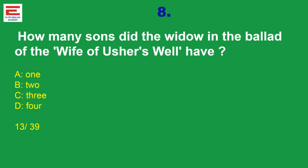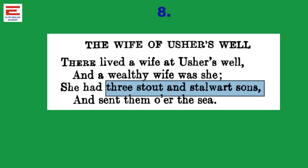Question 8: How many sons did the widow in the Ballad of the Wife of Usher's Well have? This comes under Ballads — there are 39 unauthored ballads in Peacock Volume 2. This is the third ballad, and the answer is three. The textual line reads: 'There lived a wife at Usher's Well, and a wealthy wife was she. She had three stout and stalwart sons.' Based on this textual line, three is the answer.